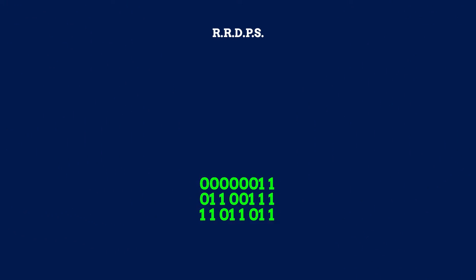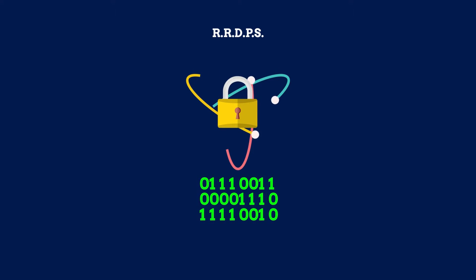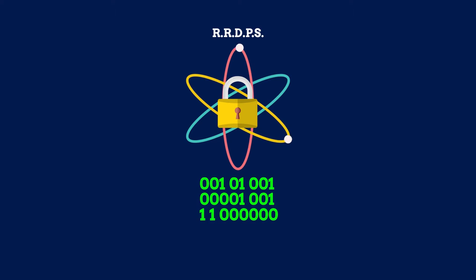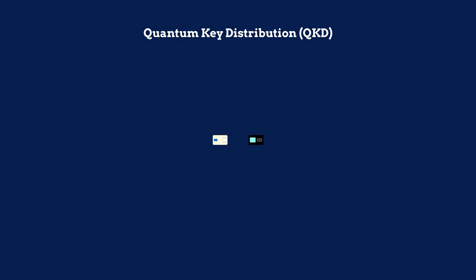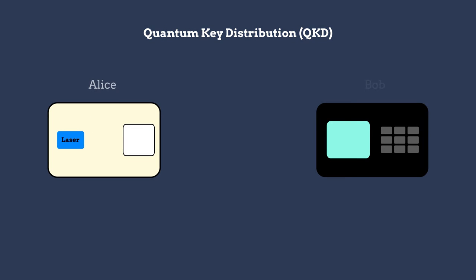The RRDPS protocol is a type of encryption procedure known as quantum key distribution. Using conventional quantum key distribution, two trusted users, Alice and Bob, can communicate by sharing a secret key encoded in pulses of light.